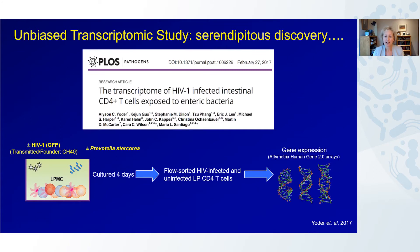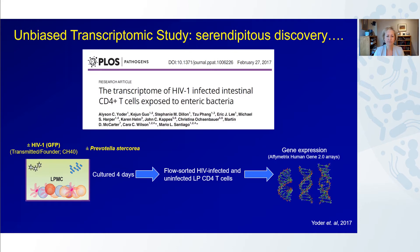The work I'm going to describe today resulted from a serendipitous finding from a previously published transcriptomic study, published in PLOS Pathogens in 2017. We were attempting to look at the transcriptome of HIV-infected intestinal CD4 T cells that were exposed to enteric bacteria. In that study, we looked at lamina propria mononuclear cells from a human gut, and we infected them with an HIV strain that expressed a green fluorescent protein.